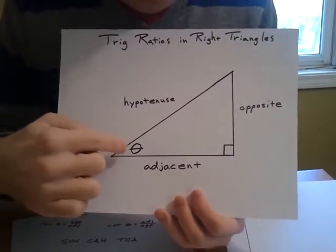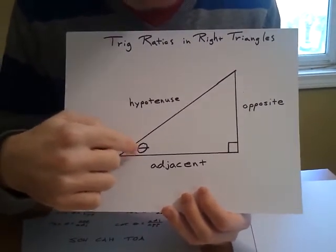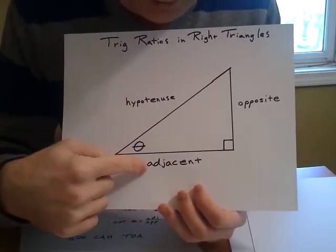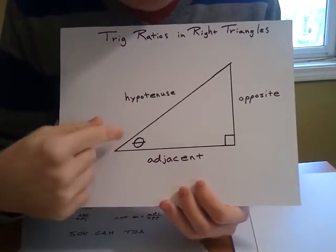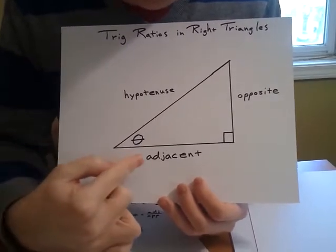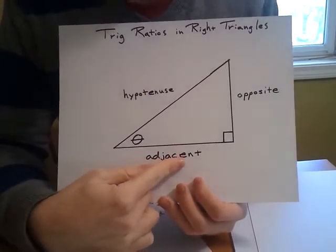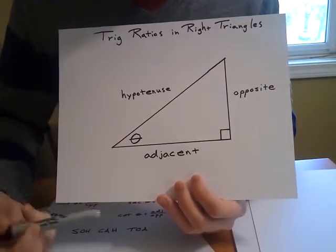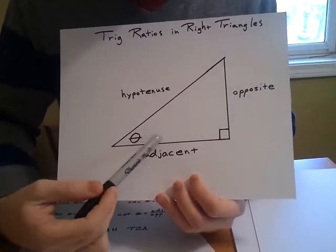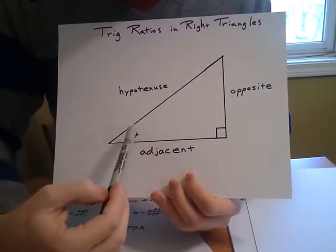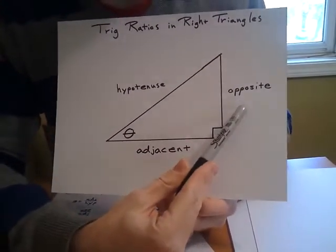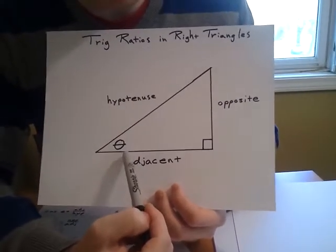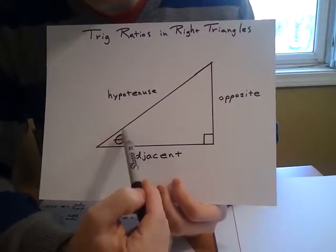And if we call this angle here theta, this is our angle that we are talking about here, this side that directly connects to it, that forms the angle with the hypotenuse, is what we would call our adjacent side. This is our adjacent side. The side that is across from this angle, totally opposite, is the opposite side. The opposite side does not form our angle at all.